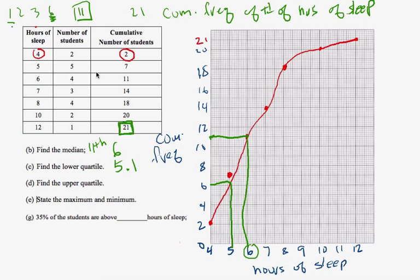The upper quartile, same discussion. I want this middle number here. If this is eleven, and this is twenty-one, I want to go, I need five numbers here, and five numbers here. And so I believe that's going to be the sixteenth position. So the sixteenth position, I go over from sixteen, and down on this line here, and I get seven point five. And the final thing is state the maximum minimum values. Maximum value here is twelve hours of sleep, and the minimum was four hours of sleep.